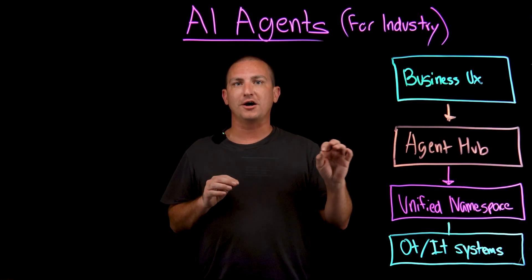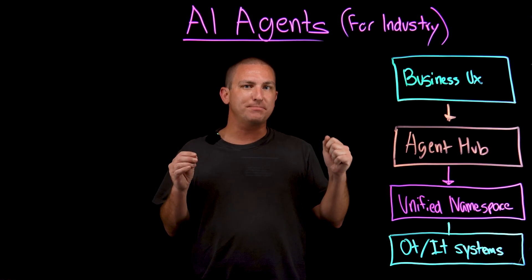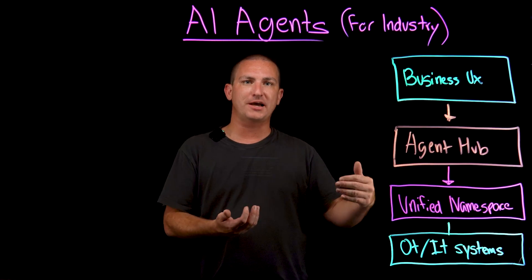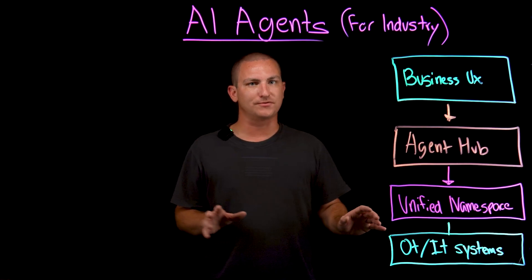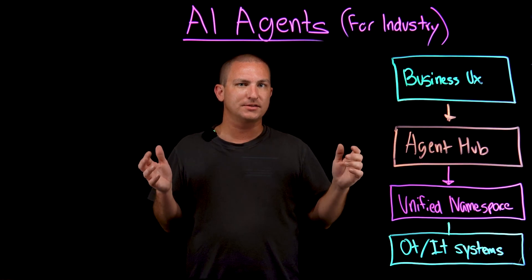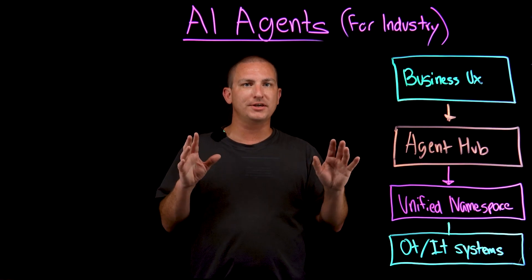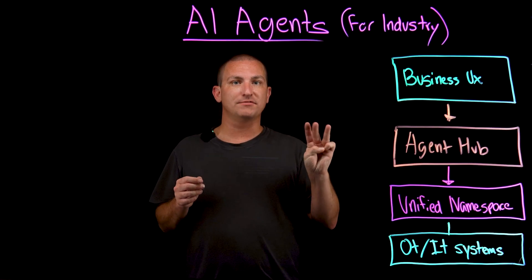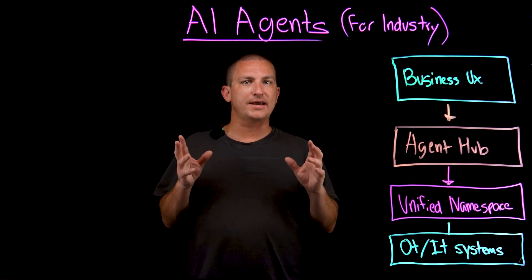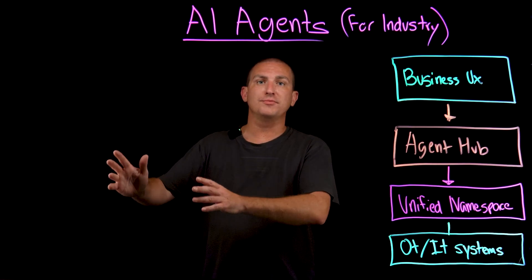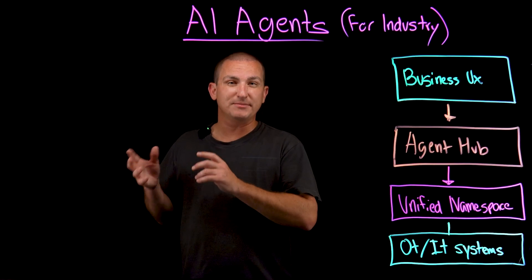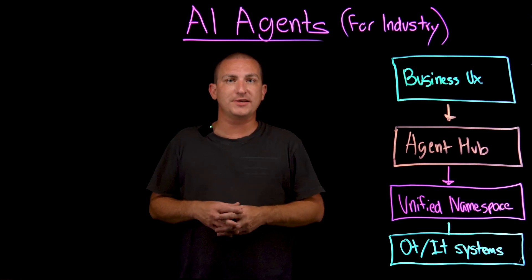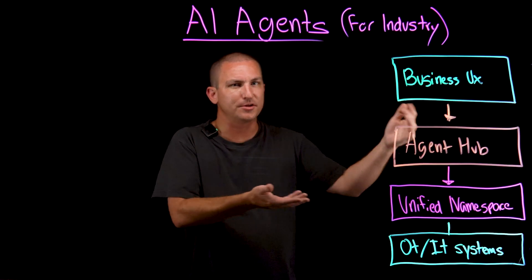Before you sprint to GitHub, a cautionary tale. The biggest reason AI agent pilots die is data sprawl. If your systems are glued together with point-to-point APIs, the agent has no single source of truth, spends half its time reconciling conflicts, and eventually gives up. The cure is front-loading the unified namespace: one topic tree, one timestamp, one version of reality. Only then can the AI agent act with confidence. Right now, your humans are spending 30% of their time switching between applications just to get the data they need — deploy AI agents without a unified namespace and they'll do the same thing.